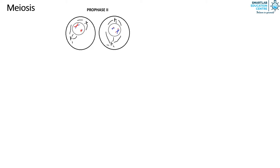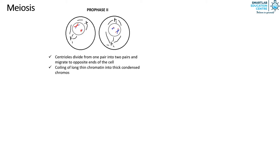Similar to prophase 1, in prophase 2 the centrioles divide from one pair into two pairs and migrate to opposite ends of the cell. The long thin chromatin threads coil into thick condensed chromosomes, the nuclear membrane breaks down, and spindle fibers connect to centromeres. However, note that there is no pairing of homologous chromosomes or crossing over in prophase 2, since the homologous chromosomes have already been separated in anaphase 1.